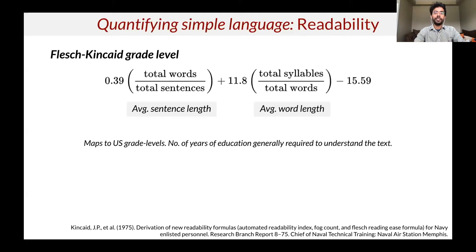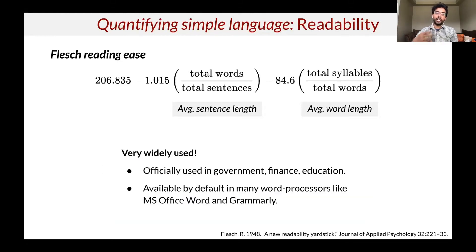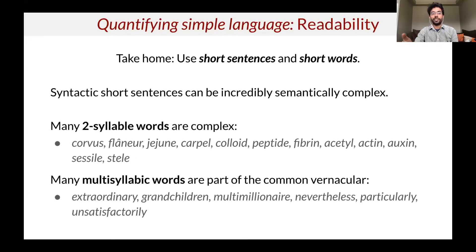One of the most popular ways of quantifying simple language is through readability. Many of you may have encountered the Flesch-Kincaid Grade Level Score or Reading Ease Score — given a piece of text, it calculates the average length of all sentences and words, combines them, and maps them to US grade levels. It's very widely used, adopted as a standard in education, government, and finance, and built into tools like Microsoft Word and Grammarly. The takeaway is to use short sentences and short words. However, this is not always enough — a sentence can be short but super hard to understand, and many polysyllabic words are actually quite easy to understand.